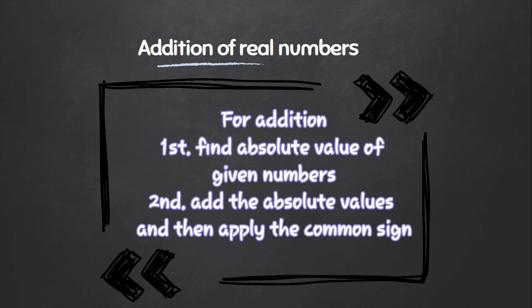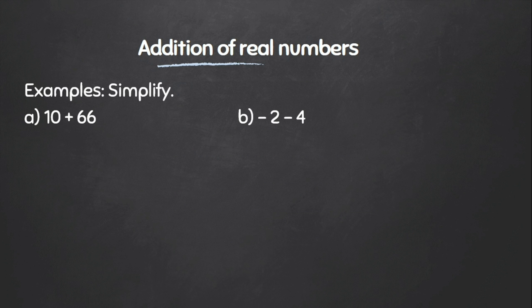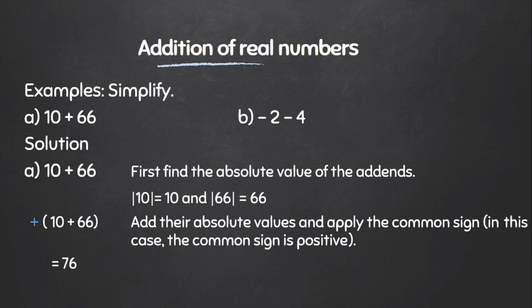When simplifying numbers with the same sign, we first add the absolute values of the given addends, then apply the common sign. For example, when we simplify 10 and 66, we find both have the same sign, so we find the absolute values of the addends and then apply the common sign.